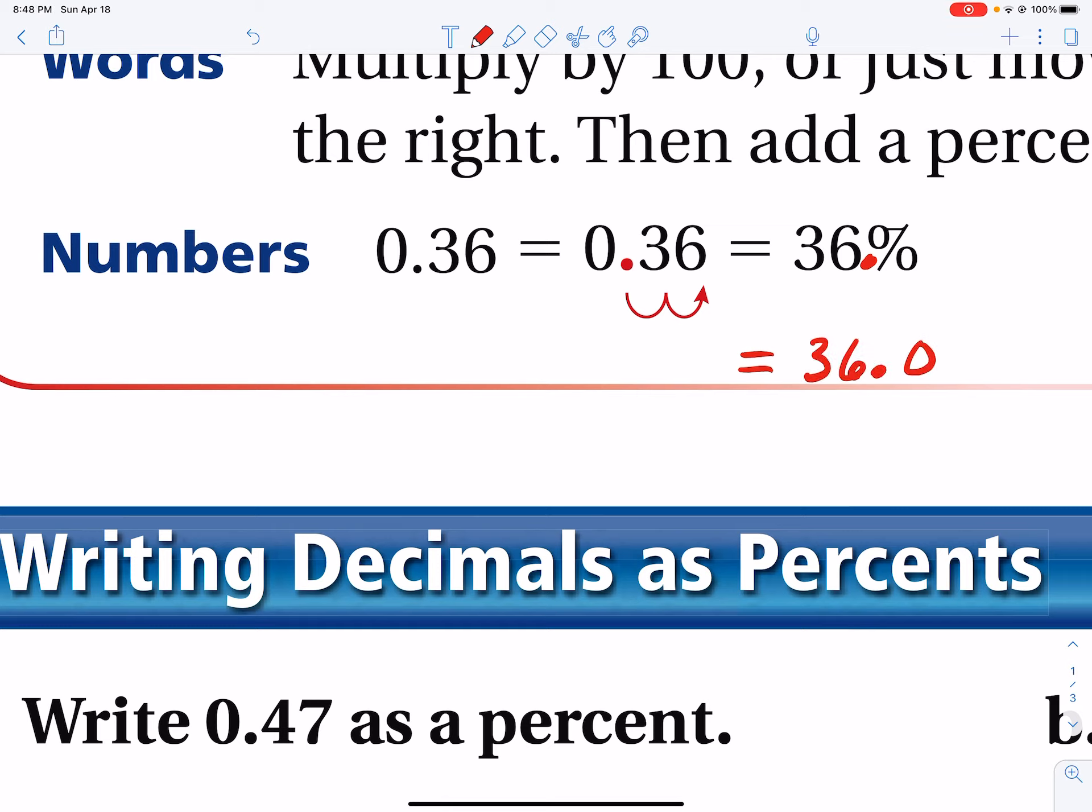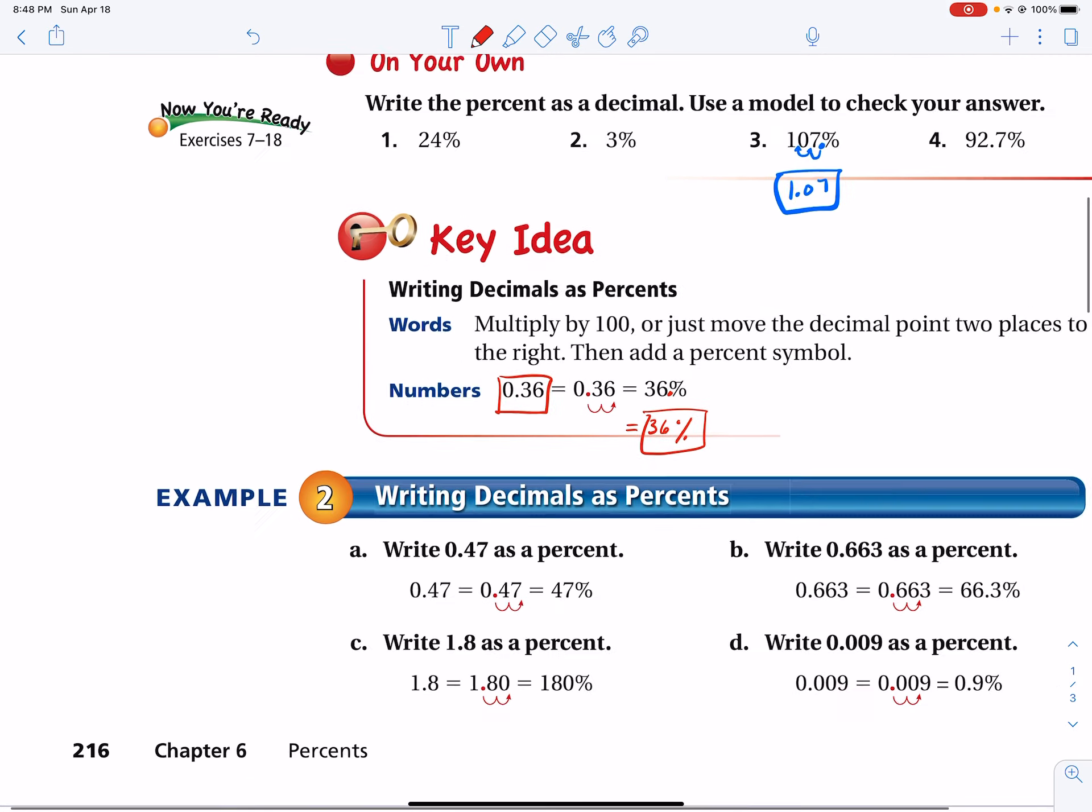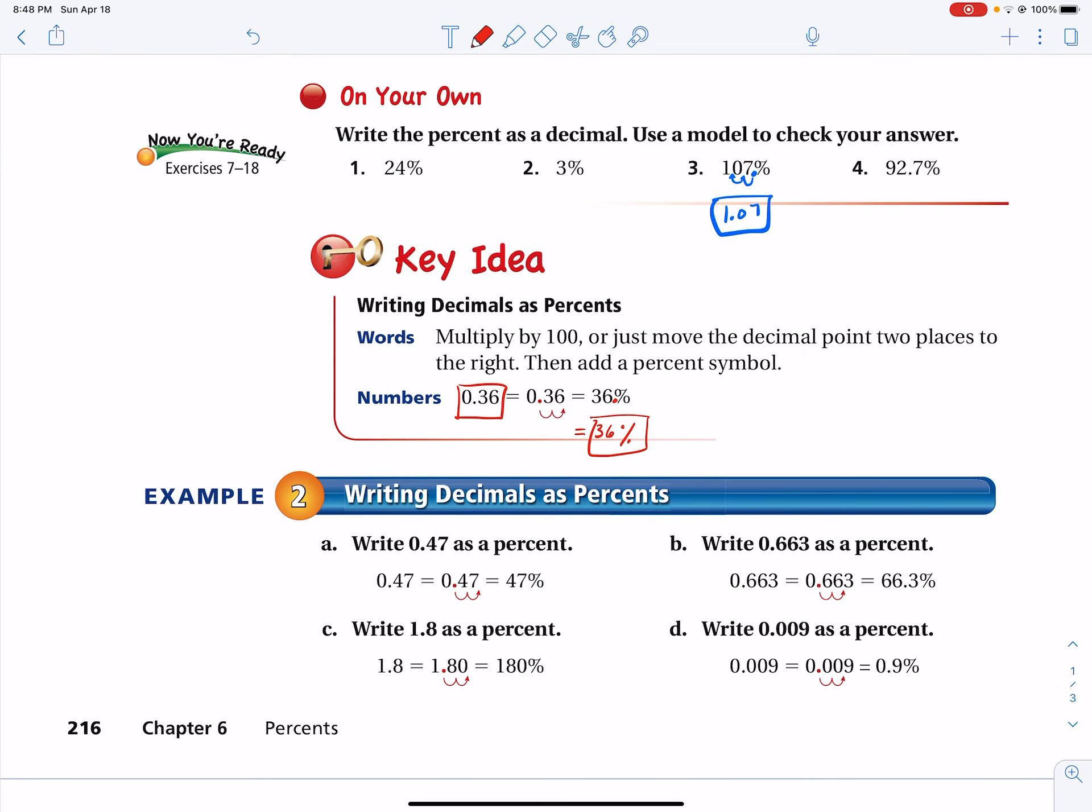There's always a hidden decimal. We don't write 36.0. We just don't do that. We write 36, right? So there is a hidden decimal there. And we don't necessarily have to write it. We just write the whole number and the percent symbol. So 36 hundredths is 36%. So when moving a decimal to the right two places, you are changing the decimal to a percent.